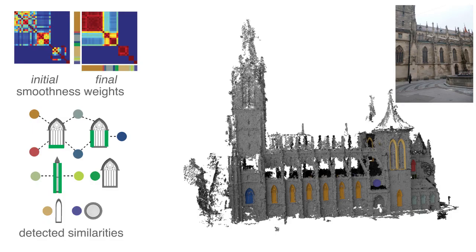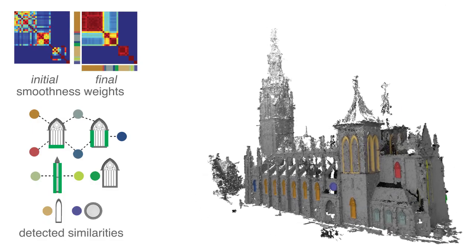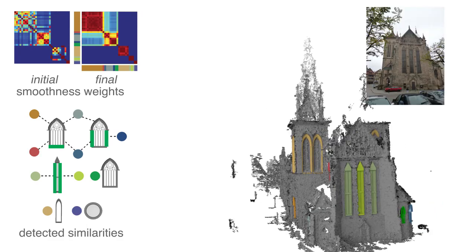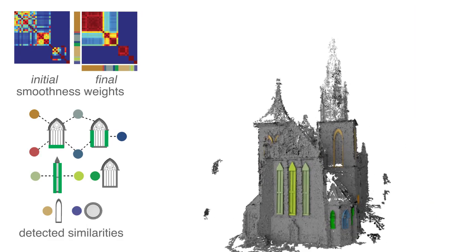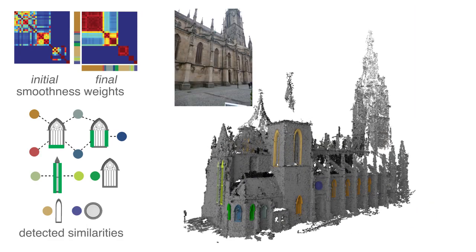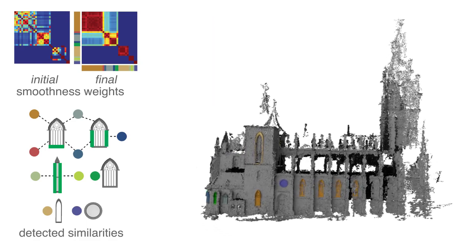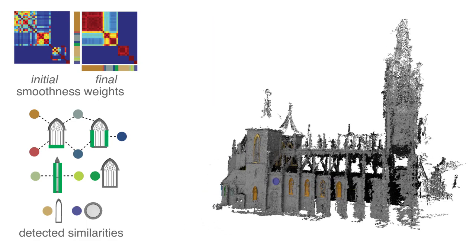We evaluate our algorithm on several datasets with varying architectural style and complexity. Identical elements are matched to the same template instance. Elements that exhibit partial similarities are matched to different instances of the same template.